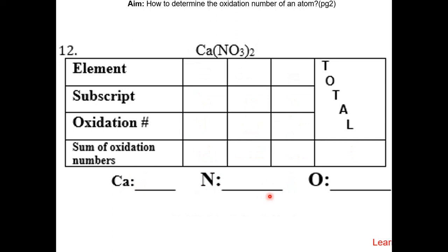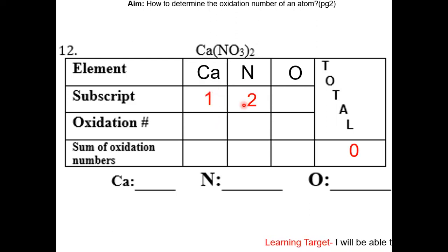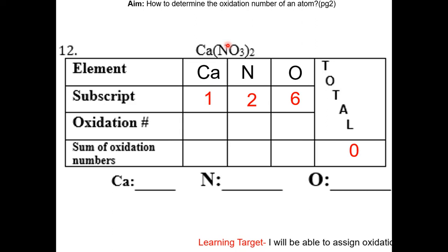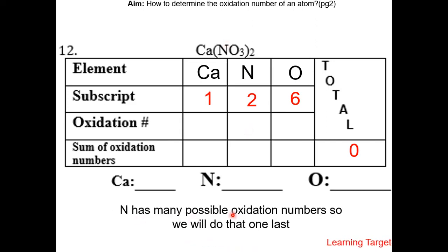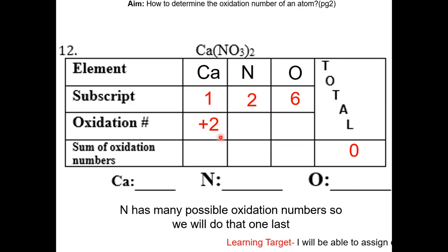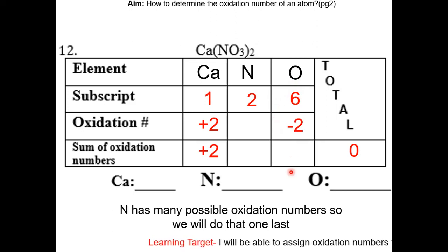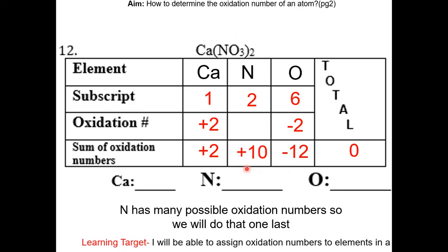Let's look at calcium nitrate. The sum of oxidation numbers in a compound is zero. There is one calcium, two nitrogens, and six oxygens — the subscript of two applies to the nitrate ion in parentheses. Since nitrogen has many possible oxidation numbers, we do that one last. Calcium is +2 (group two element), so the sum is +2. Oxygen is −2, and the sum for six oxygens is −12. Therefore the sum for nitrogen must be +10, and since there are two nitrogens, each nitrogen is +5.